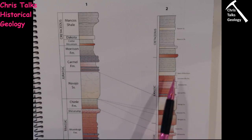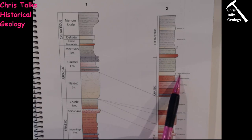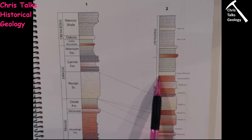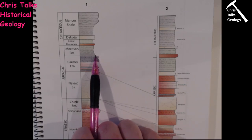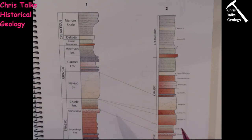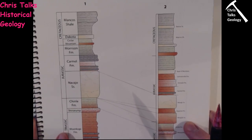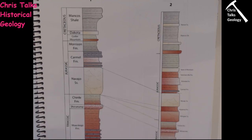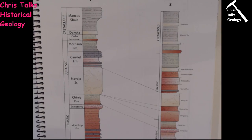Also note that for some reason the textbook labels the Morrison Formation as the 'base of Morrison,' which is the contact right at the bottom of that formation. If you are using the online textbook, screen-grabbing both pages and placing them into a Word document or PowerPoint slide is probably the easiest approach — then just draw the lines of equivalence between the layers digitally.